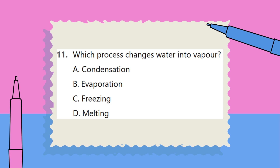Question 11. Which process changes water into vapor? A. Condensation. B. Evaporation. C. Freezing. D. Melting.